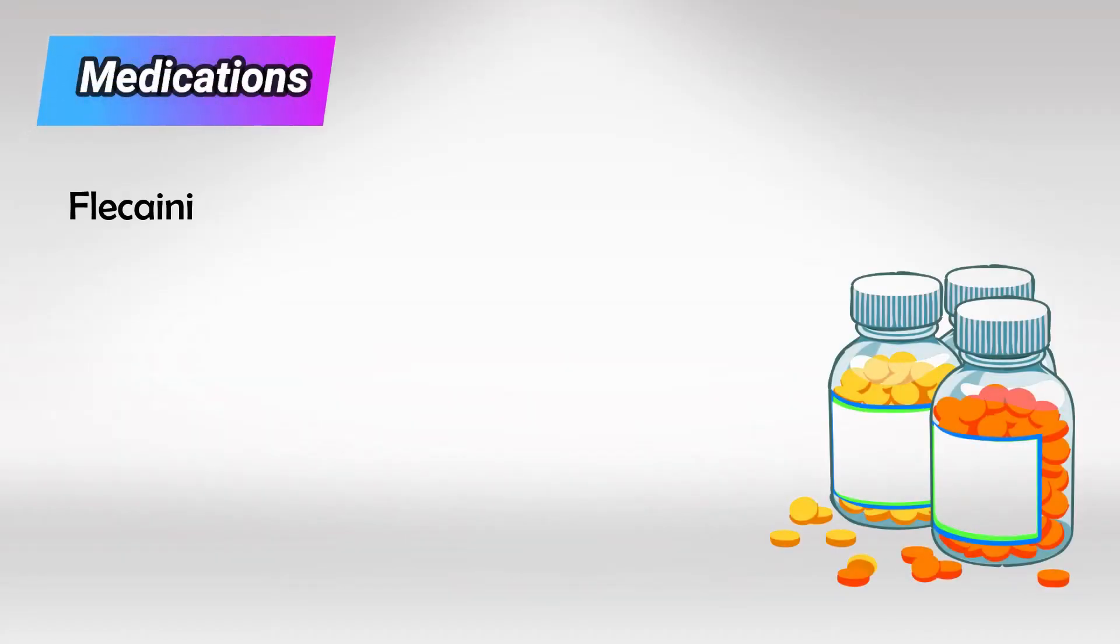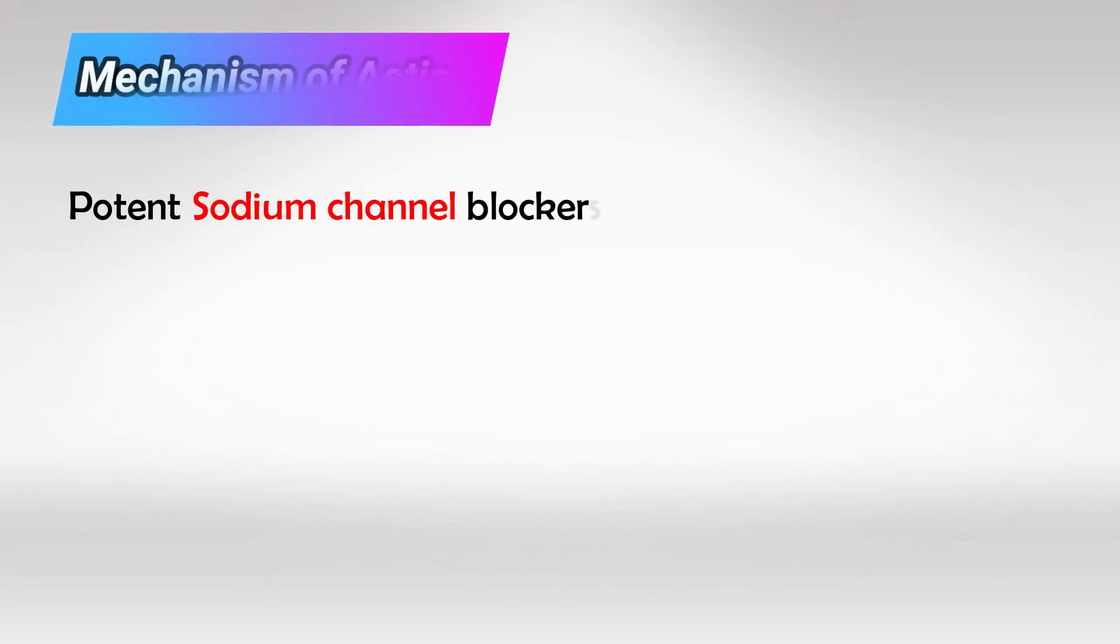This includes the medications flecainide and propafenone. These are extremely potent sodium channel blockers. So they're reserved for patients with arrhythmia where everything else has failed.